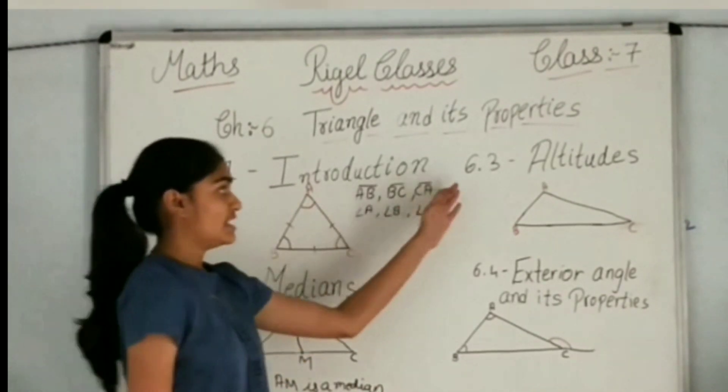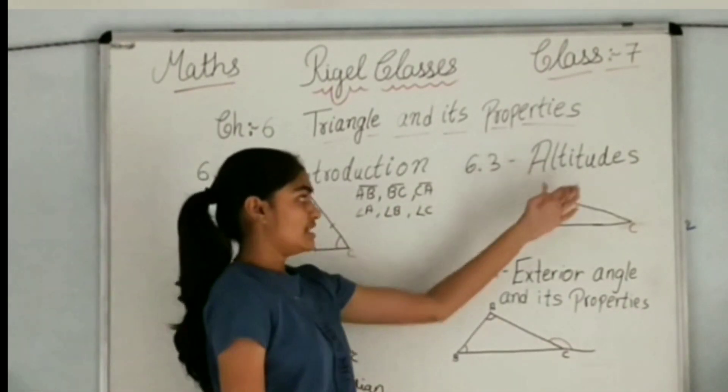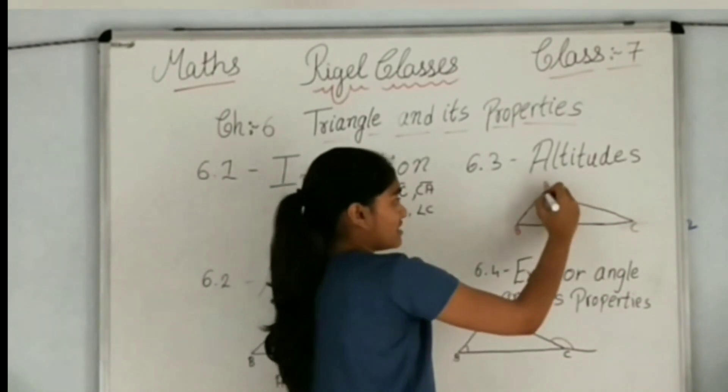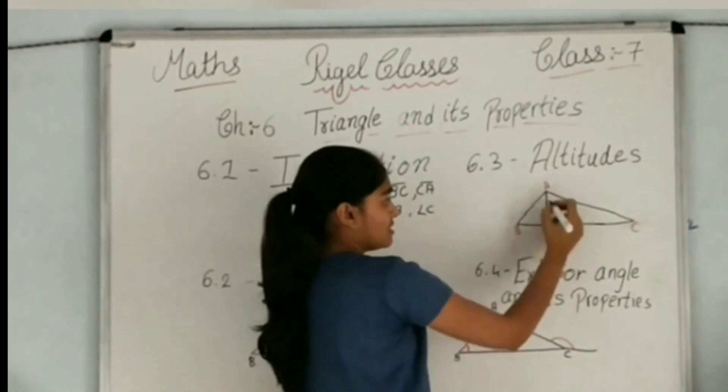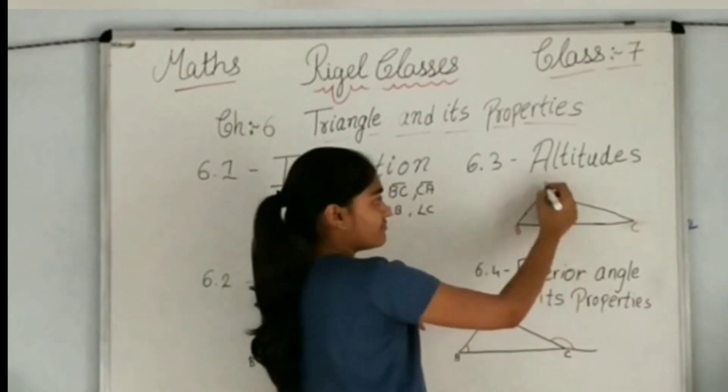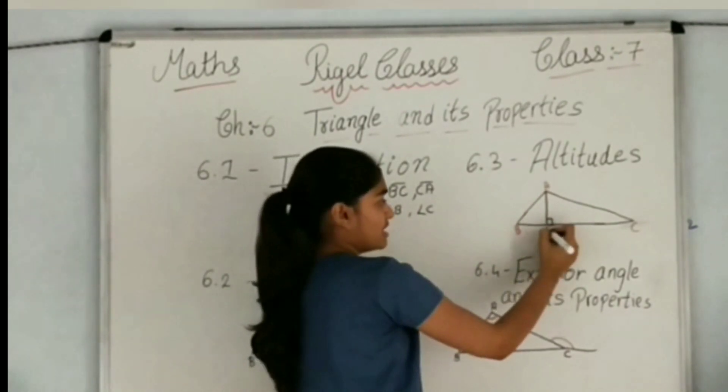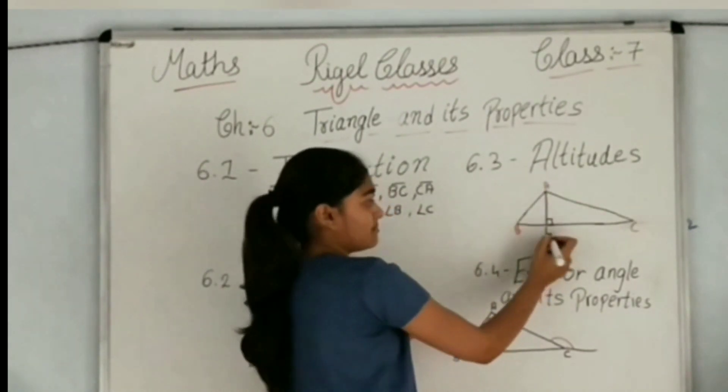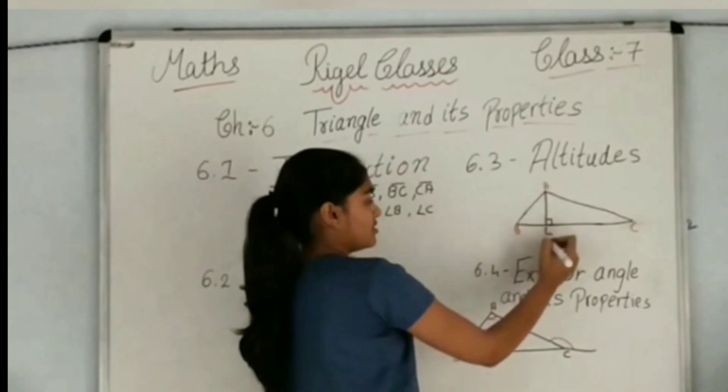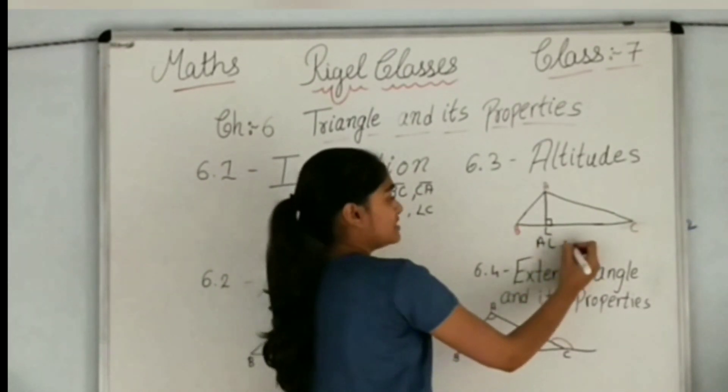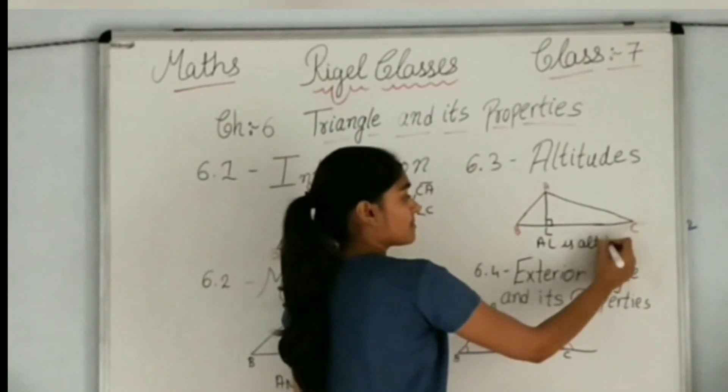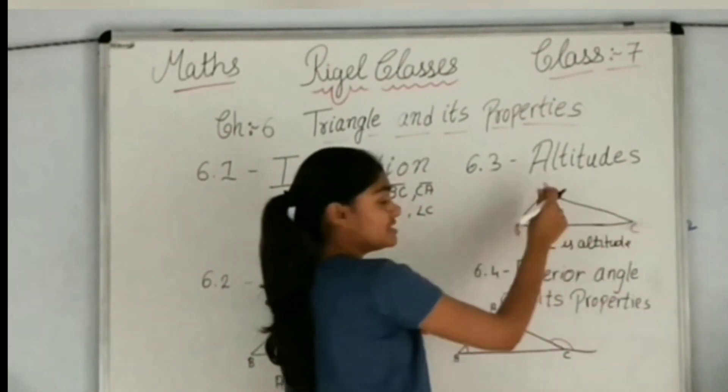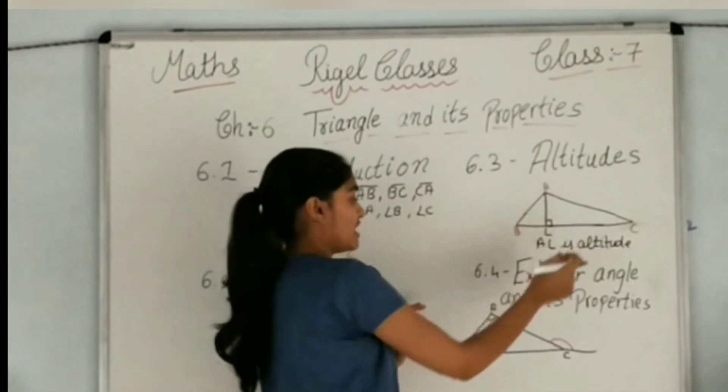Then we will see altitudes. What is an altitude? The altitude decides the height of a triangle. Here, we will draw a perpendicular line from the vertex. That is, AL, we will give the name L. So here, AL is the altitude. It decides the height of a triangle.